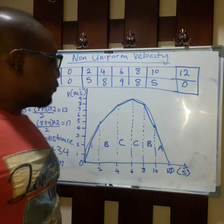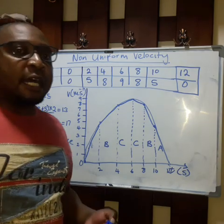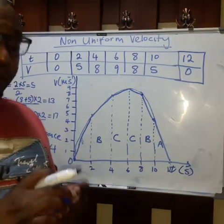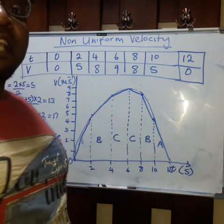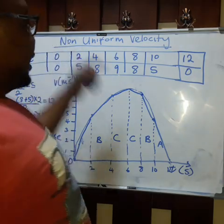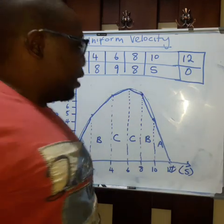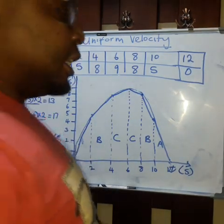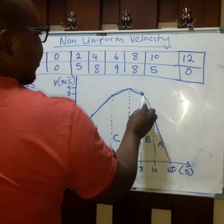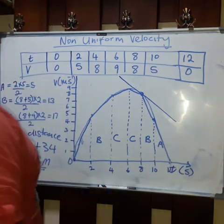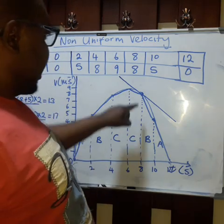This is how we find the distance under a non-uniform velocity-time curve. When they say find acceleration on this graph, you look for instantaneous acceleration because the graph is not a straight line — it is a curve, so the acceleration varies along the graph. If they say find the acceleration at, say, 8 seconds, you go to 8 seconds, touch the graph, draw a tangent there, find the gradient of that tangent, and the answer becomes the acceleration at that particular point.